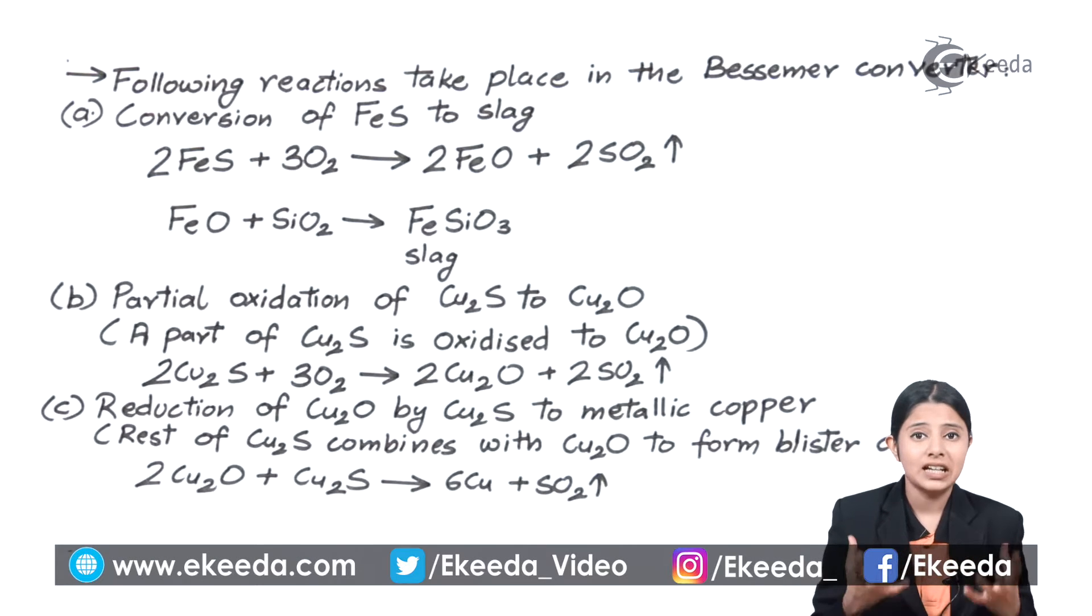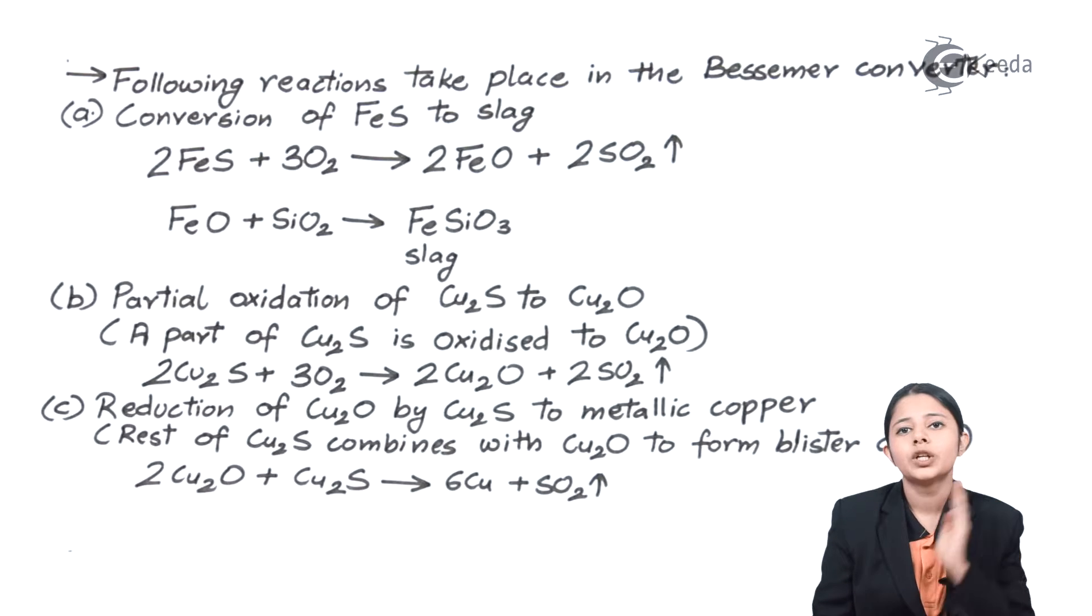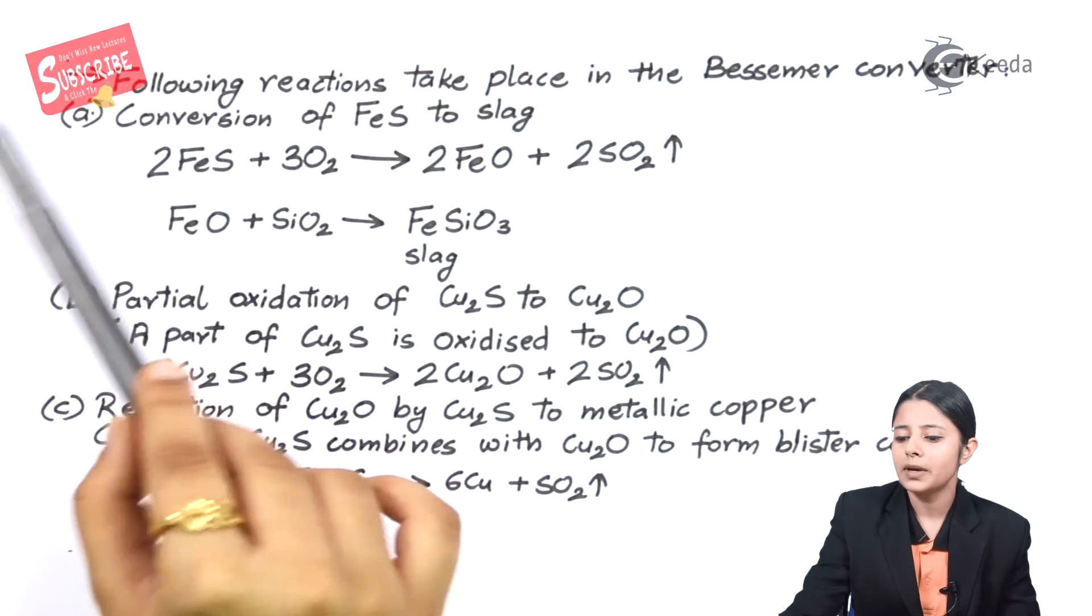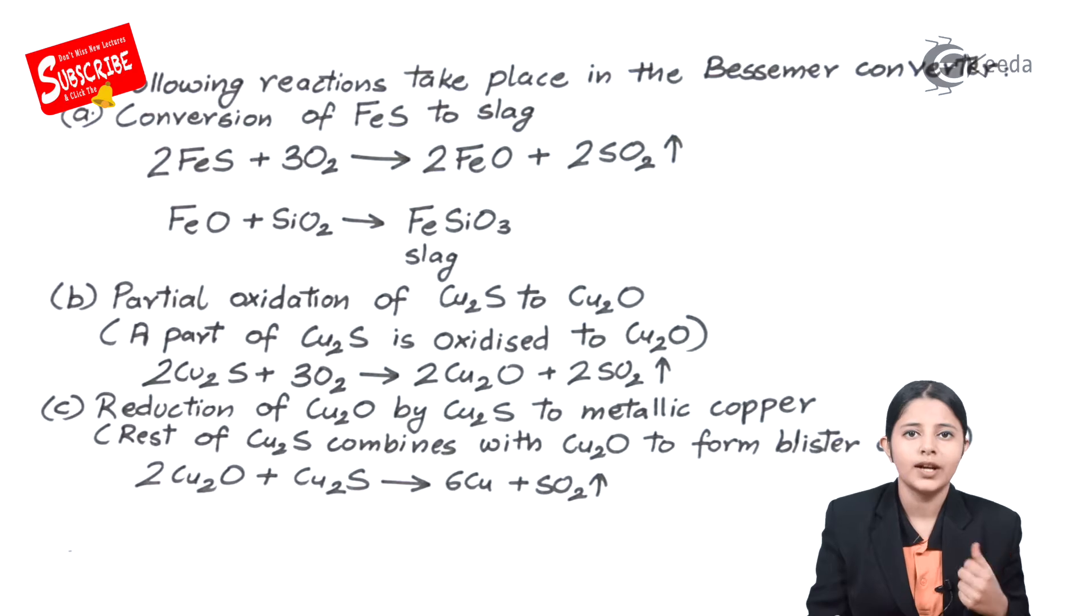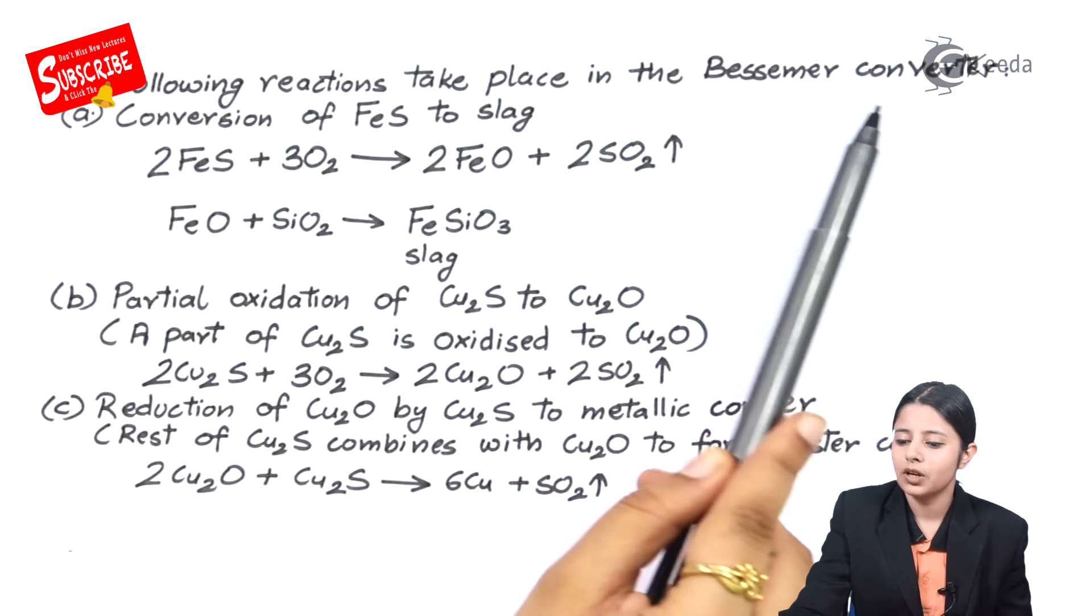Now remember what are we exactly converting from what in the Bessemer converter. We have the molten matte in the Bessemer converter. And at the end we want pure copper. So there are a few reactions which take place. Now let us see these reactions from the matte to the pure copper. Now what basically is matte? It is ferrous sulphide and copper sulphide. So following reactions take place in a Bessemer converter.